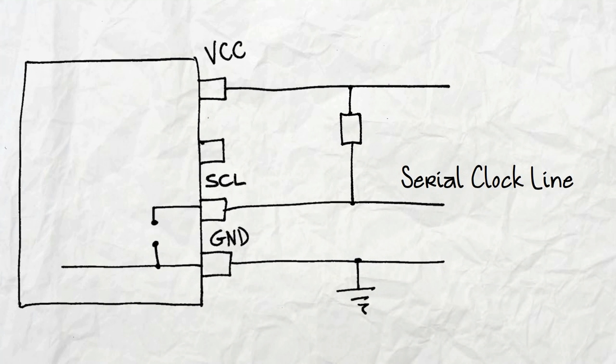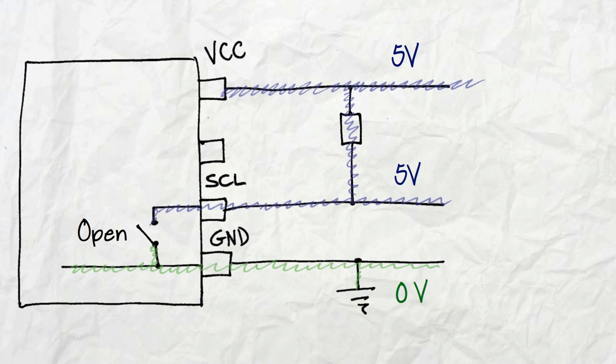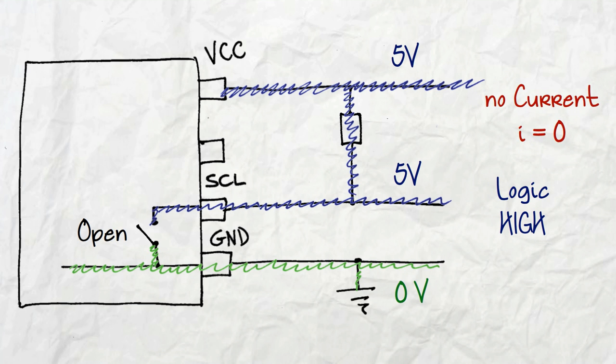Okay, so let's see how the serial clock line works. The data line works the same way, but let's focus on one of them only. Suppose your device works with 5 volts. If the switch is open, then all the blue region has a 5 volt potential. The signal on the clock line is now logic high. Also, as a consequence, there is no current flowing through the resistor or the device.